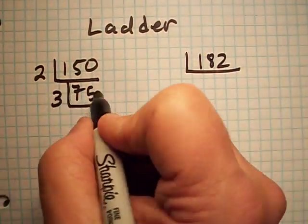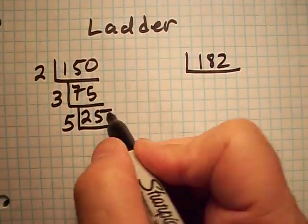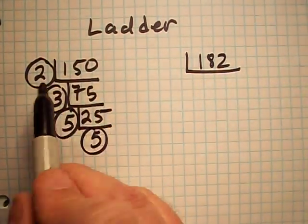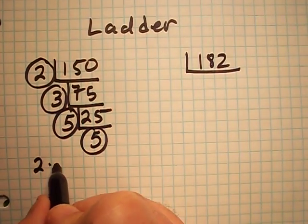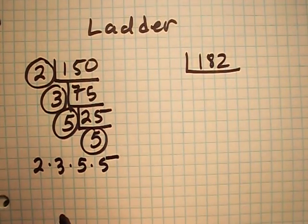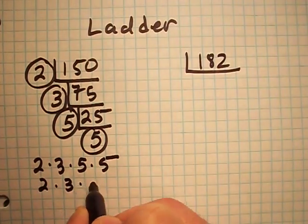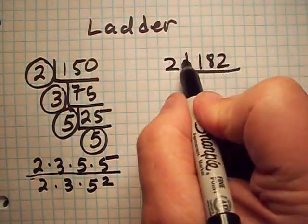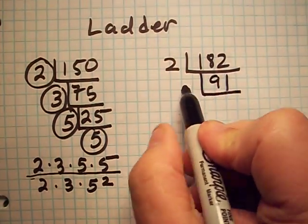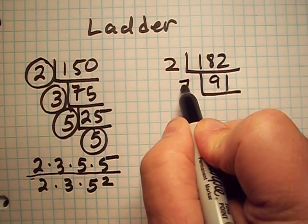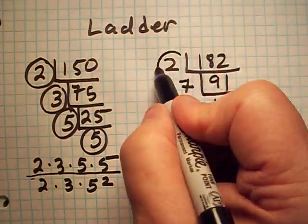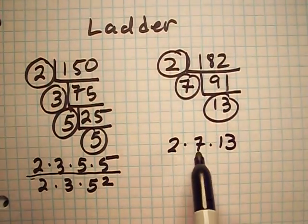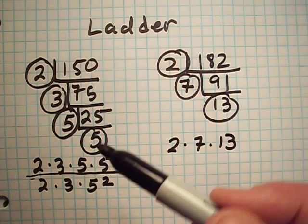For 150: 2 goes into 150 giving 75, then 3 goes into 75 giving 25, then 5 goes into 25 giving 5. Now I have my prime factors on the outside of the ladder: 2, 3, 5, and 5. So the prime factors are 2 times 3 times 5 times 5, or 2 times 3 times 5 squared. For 182: 2 goes into 182 giving 91, and 7 goes into 91 giving 13. So the prime factors of 182 are 2 times 7 times 13.